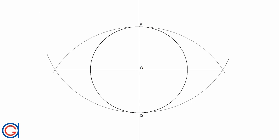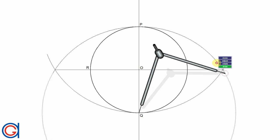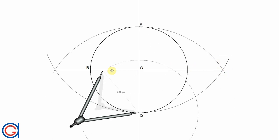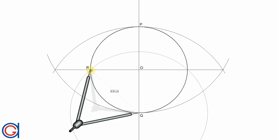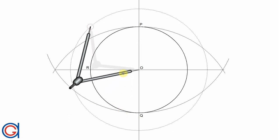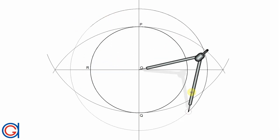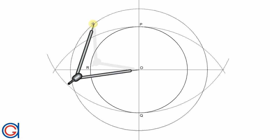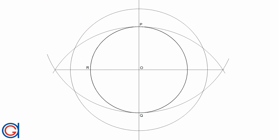Where this line cuts the left side of the circle, we name that point R. Now setting our compass on Q to the length QR, we place the compass on the origin O and draw another circle with this radius, shown here as a construction line.